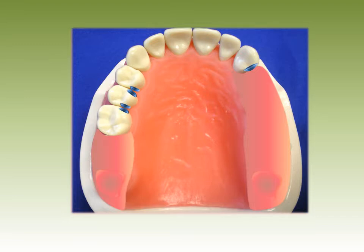Let's design a partial starting with guide plane placement. Definitely a short guide plane on the distal of number 11, being careful not to over-prepare the tooth. Then long guide planes on the lingual axial wall of the bicuspids and molars, as shown in the diagram.